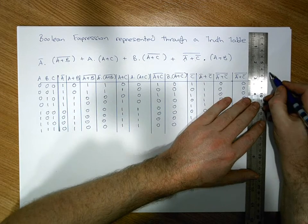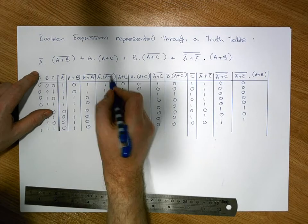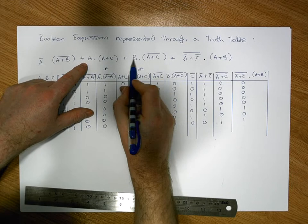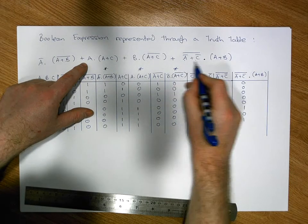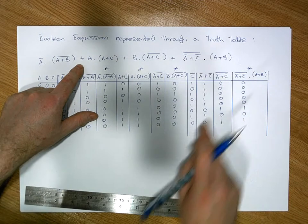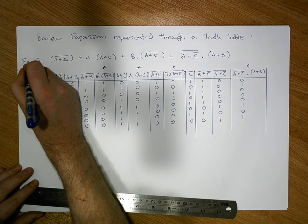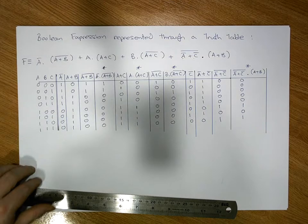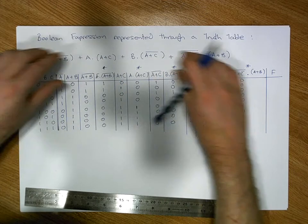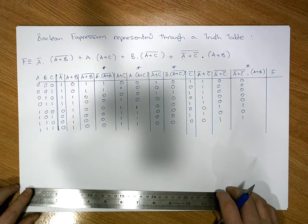So we've now calculated all four terms: the first term, the second term, the third term, and the fourth term. What we need to do is OR all of them together to produce the function F. The function F is an evaluation of three ORs across four inputs — the four term columns we've defined.